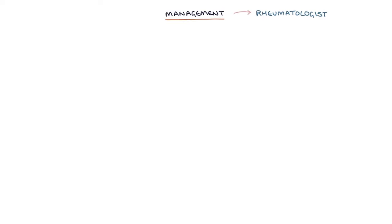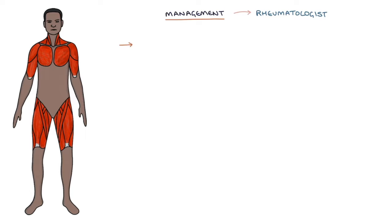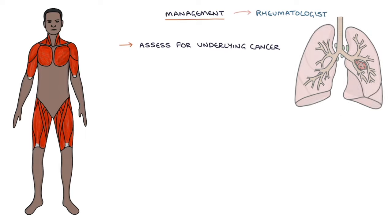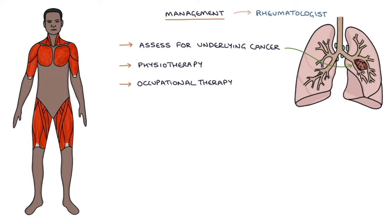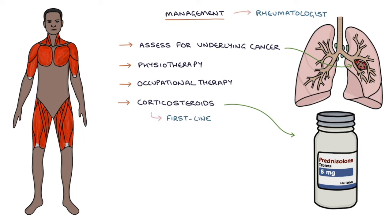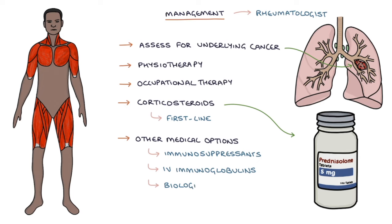A rheumatologist will guide management. New cases need to be assessed for possible underlying cancer. Patients may benefit from physiotherapy and occupational therapy to help with muscle strength and function. Corticosteroids, for example prednisolone, are the first-line treatment for both polymyositis and dermatomyositis. Other medical options where the response to steroids is inadequate include immunosuppressants such as methotrexate or azathioprine, IV immunoglobulins, and biologic therapy such as infliximab or etanercept.